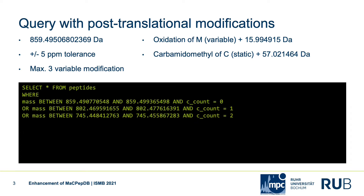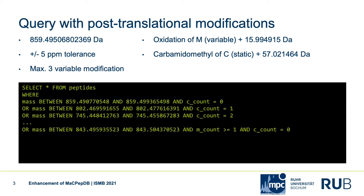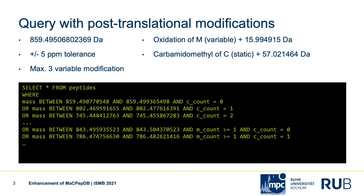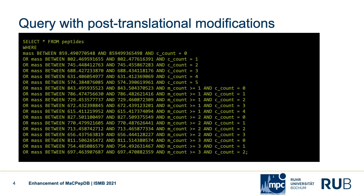Because the oxidation of M is variable, it can be ignored for the first combinations. In the later combinations, we have to consider it, so we get peptides with at least one, two, or three M's to match our targeted mass again. The finished query contains 18 mass modification combinations.